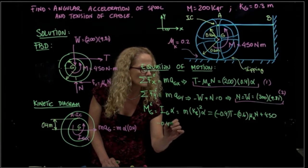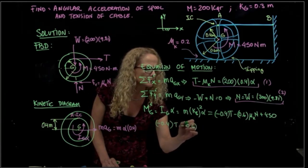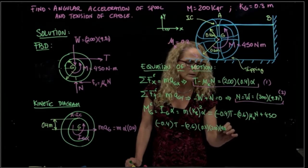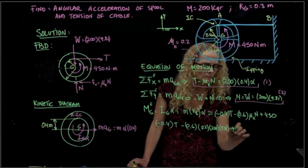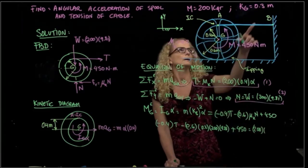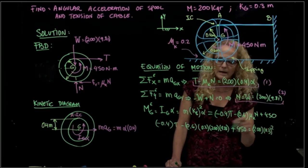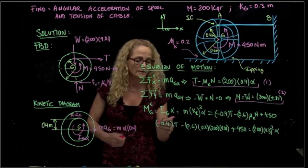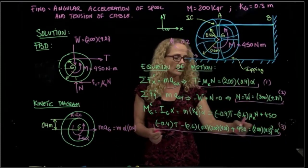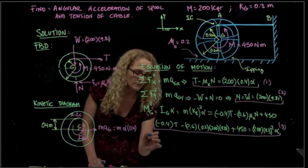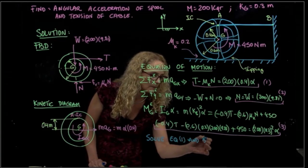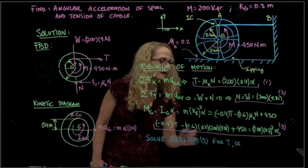So that equation becomes, if I substitute everything, I have 0.4 times the tension minus 0.6. I know the coefficient of friction, which is 0.2. I know the normal, which is 200 times 9.8. And I know the moment, 450. And finally, this is equal to my mass times 0.3 squared times alpha. So I have a second equation which involves these two variables. So then I will solve equation one and three for tension and the angular acceleration.